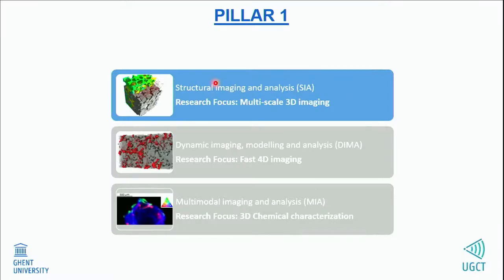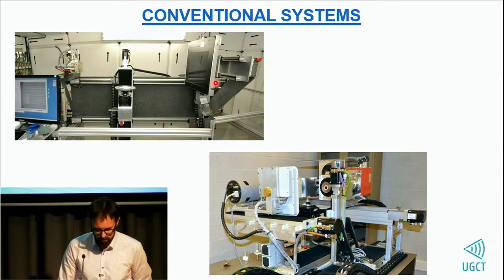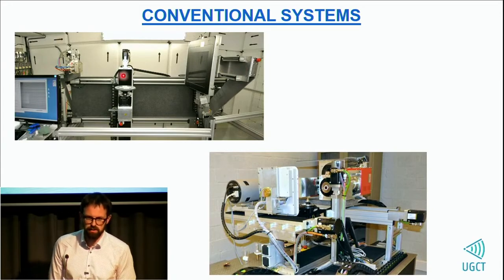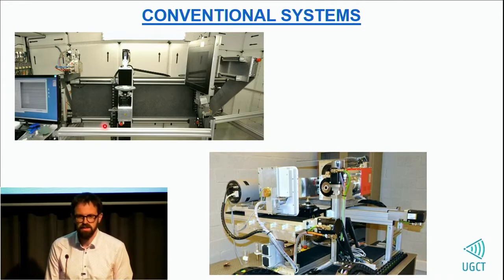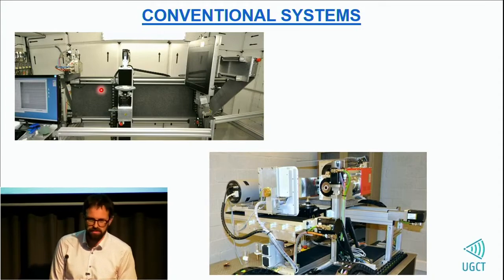The first pillar is structural imaging. We have a research focus on multi-scale 3D imaging, for which we use our more conventional systems. That's the high energy CT scanner — it's really quite a big system. We can move the detector almost two meters away from the source, which is quite practical for very large objects. The object stage can carry up to 100 kilograms. It can go down to three micron resolution, of course only for small objects.